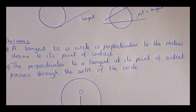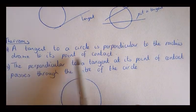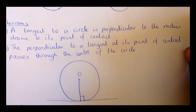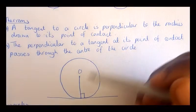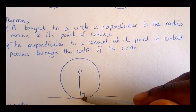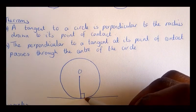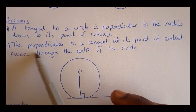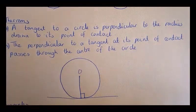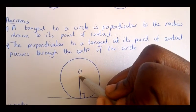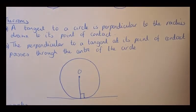Theorem number one: a tangent to a circle is perpendicular to the radius drawn to its point of contact. So if we look at this circle, this is a tangent — it touches the circle at one point only — so this radius is perpendicular to the tangent, meaning this angle is 90 degrees. Theorem number two: the perpendicular to a tangent at its point of contact passes through the center of the circle, so the perpendicular passes through the center and it is a right angle.